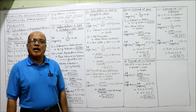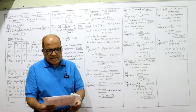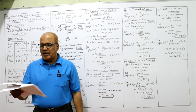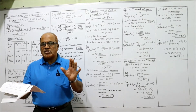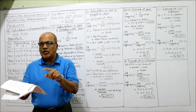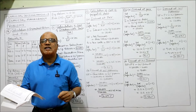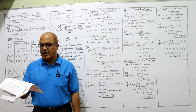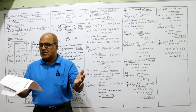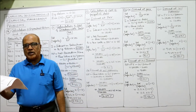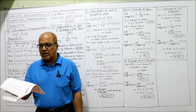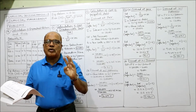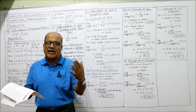Problem number 12: X Limited has 10% irredeemable perpetual debt of ₹1 lakh. Tax rate is 50%. Face value = ₹1 lakh, interest rate = 10%, so I = ₹10,000. T = 0.5. Determine cost of debt before and after tax under three cases: (a) issued at par, (b) issued at 10% discount, and (c) issued at 10% premium. There is no flotation cost.